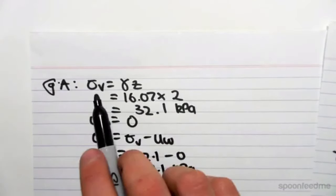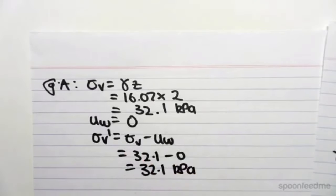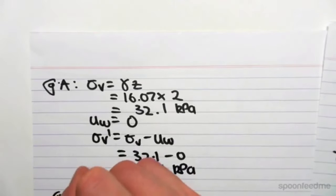So when you're above the water table, our total stress equals our effective stress because there's no pore water pressure. Now, at B.